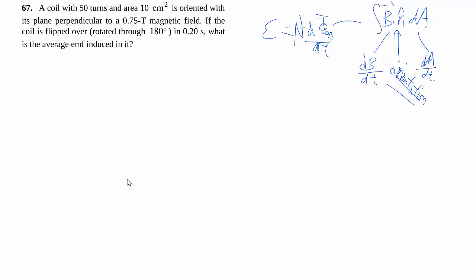So here we have a coil with a number of turns, say like that, with a certain area, and it's in the plane perpendicular to the field. So let's say my B looks like that, and there's my n.